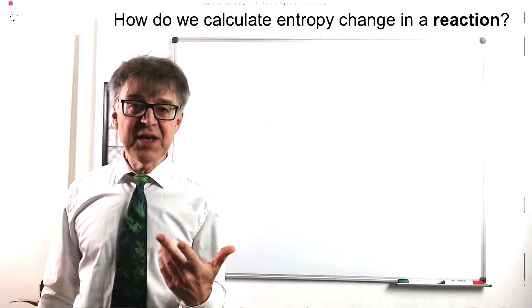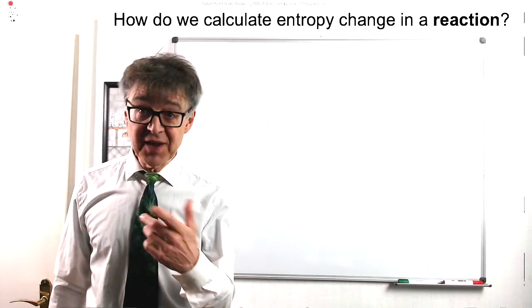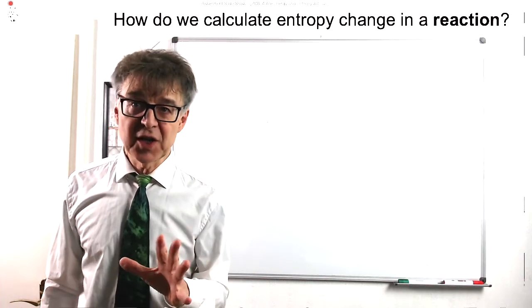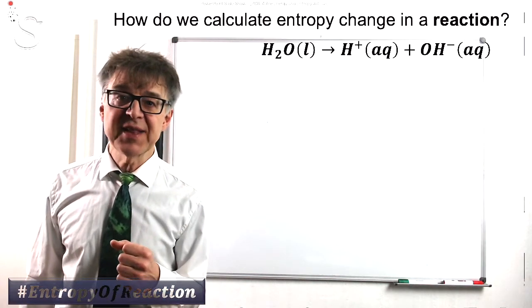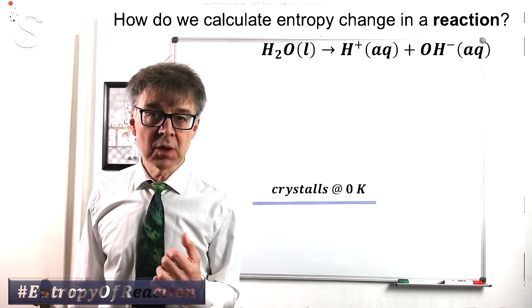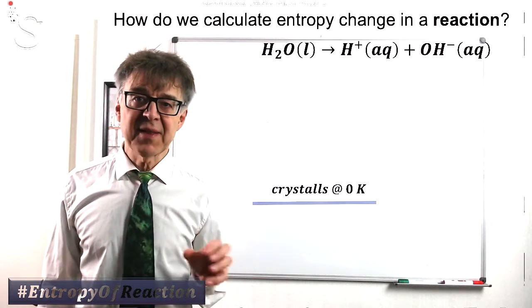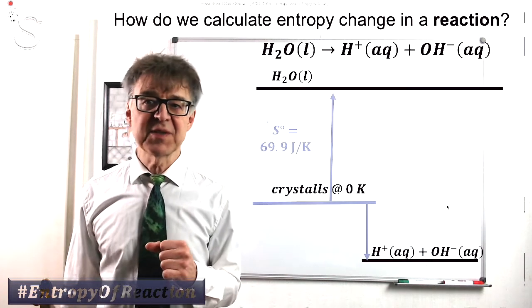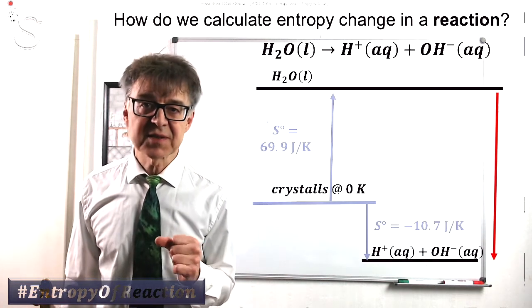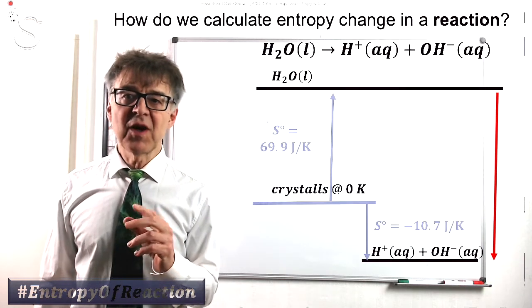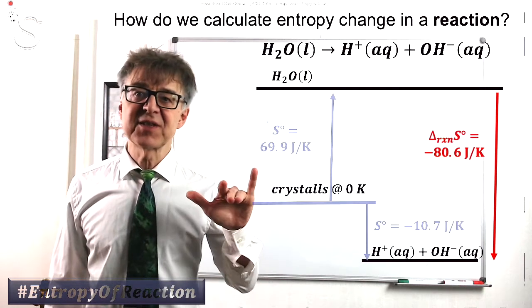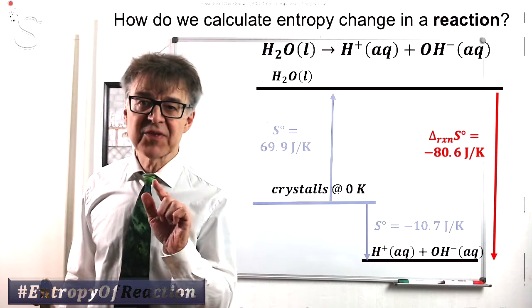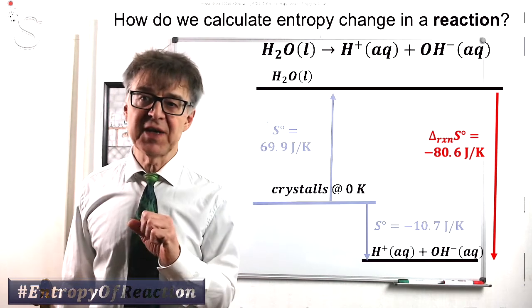We calculate entropies of reaction just like enthalpies of reaction, starting with standard values from thermodynamic tables and applying Hess's law. We look at the standard entropies of the products and the reactants and calculate the difference between these two levels. With autoprotolysis, entropy decreases sharply, which means that the process is not favored entropically, entropy is not with us.